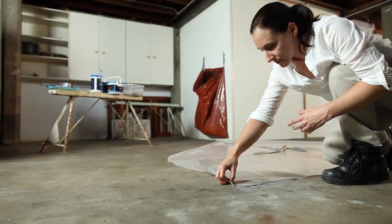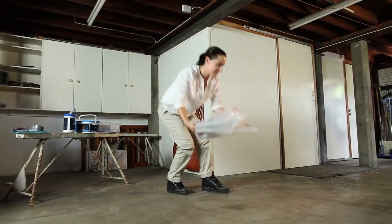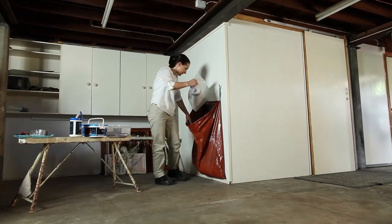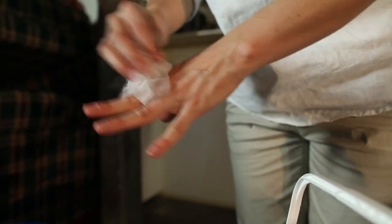Safely dispose of the plastic on the ground by folding it inwards and placing it into the waste bag. Then wipe your hands with a wet wipe and wash them as soon as possible.